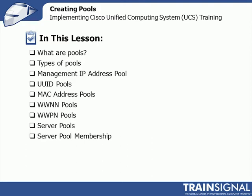After that, we're going to go through each one of them individually — don't worry about the acronyms, we'll define those as we go. We'll start with Management IP Address Pool, UUID Pools, MAC Address Pools, WWNN and WWPN Pools, Server Pools, and then finally Server Pool Membership. There's going to be a lot of jumping back and forth in and out of the labs in this lesson, so it's going to be very quick. We'll describe a pool, jump to labs, show you how to create it, give you some recommendations for naming schemes and functionality.